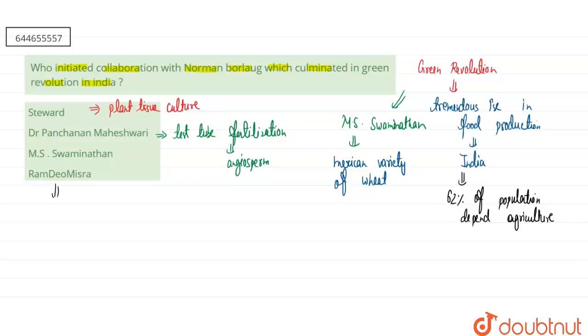The fourth option is Ramdev Mishra. He is known as the father of ecology in India. He was associated with ecology in India. So the correct answer to this question will be the third option, that is MS Swaminathan.